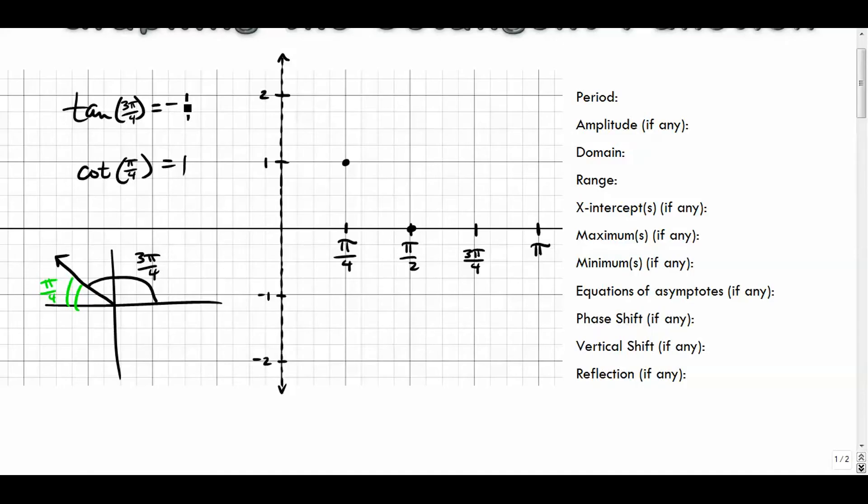All right, so the tangent of 3π/4 is negative one. Well, the cotangent of 3π/4 is negative one over one, which is still negative one. So that goes right here. All right, you can already see a nice symmetry occurring.